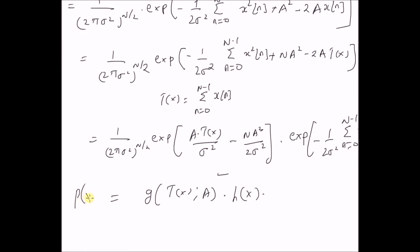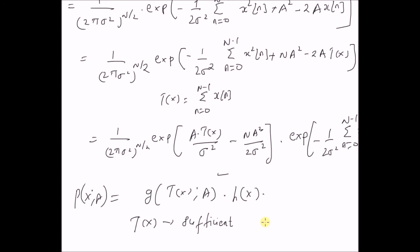So, the probability distribution p(x; a) can be written as a product of two functions, where the first is a function of the statistic and the parameter, and h(x) is a function of the observations only. Therefore, T(x) is a sufficient statistic for estimation of the unknown parameter a, based on the Neyman-Fisher factorization theorem. We can clearly state that T(x) defined as the sum of the observations is a sufficient statistic for the estimation of the DC level in a linear model.